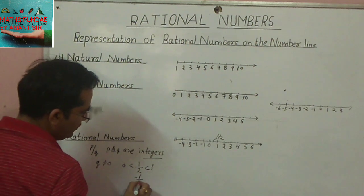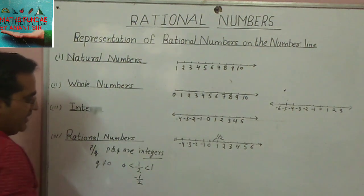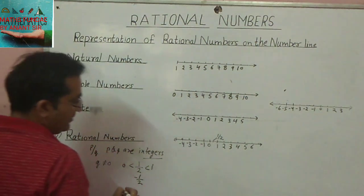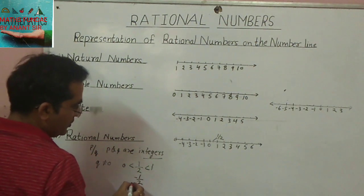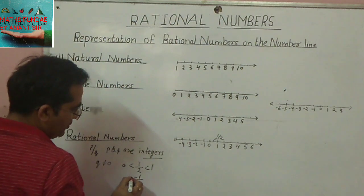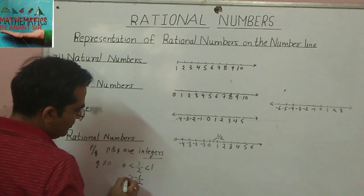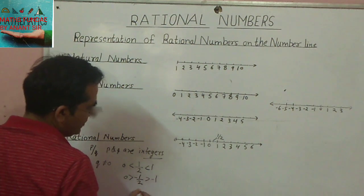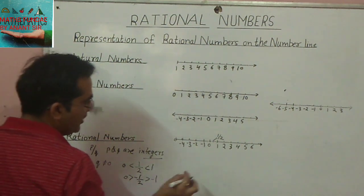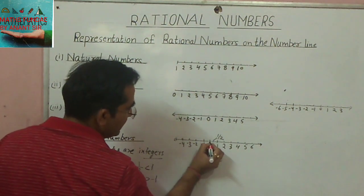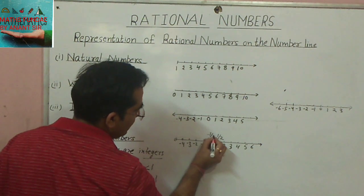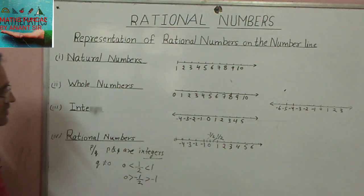Now if we have minus 1 upon 2, it lies between 0 and minus 1. That marked point is minus 1 upon 2.